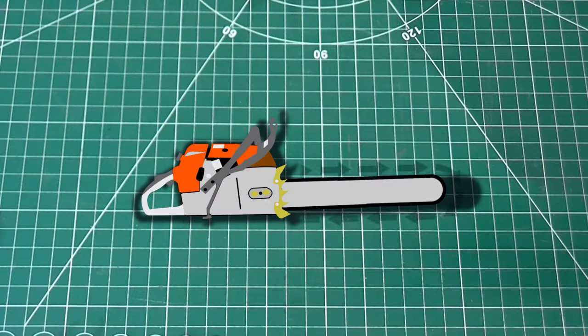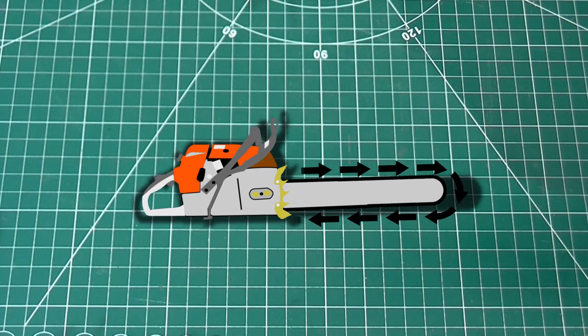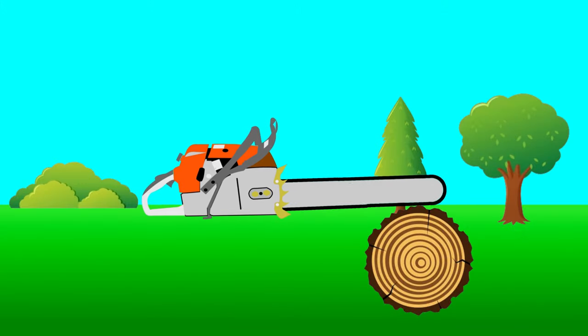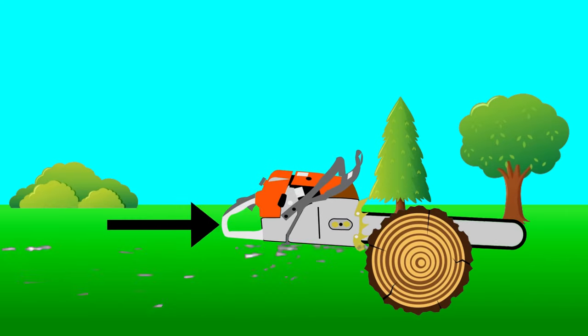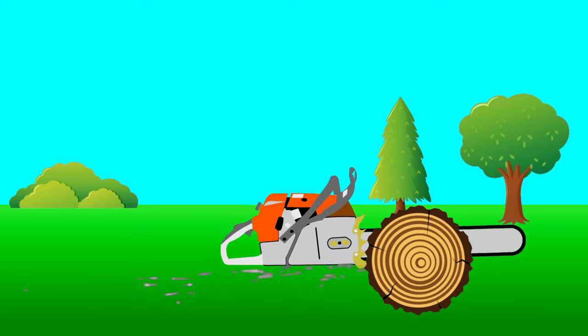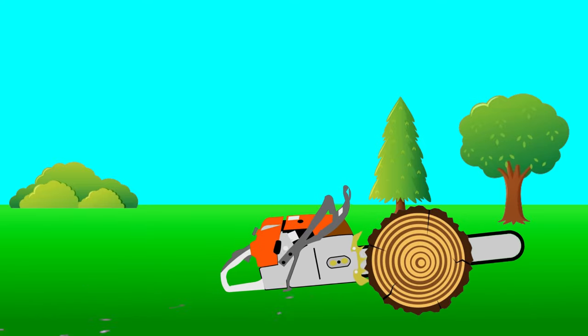Because of the chain rotation, when cutting with the bottom of the bar, the saw tends to pull itself into the cut. And it's normal to let it pull itself all the way in and rest against the dogs.